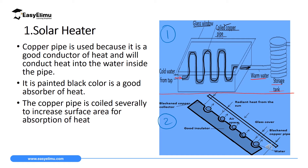The cross-section of the solar heater shows a blackened copper collector — blackened because black is a good absorber of heat, and made of copper because copper is the best conductor of heat. There is also a wood insulator on which the pipes rest, an airspace between the glass window and the pipes, and blackened copper pipes.